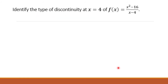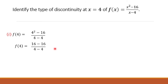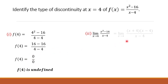Let us have some examples. First, let us identify f. By direct substitution, we can have 0 over 0. Therefore, f is undefined. Since we have 0 over 0, to get the limit, we can do factoring.